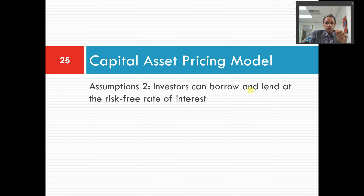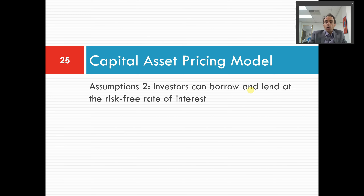If we all end up holding the same risky portfolio, the only optimal portfolio that we could possibly hold is going to be the market portfolio of all risky assets. And if we're all holding the fully diversified market portfolio, the only risk factor we're going to care about in pricing those assets is systematic risk — we won't care about asset-specific risk because none of us will be exposed to it.